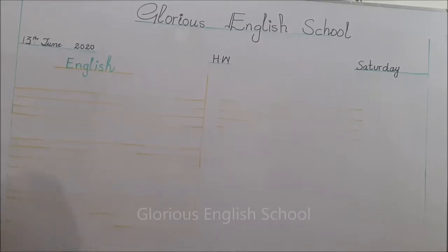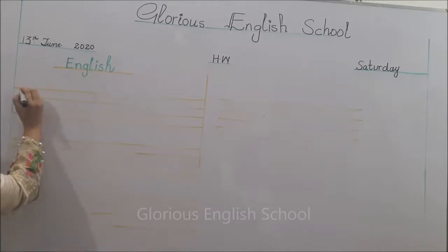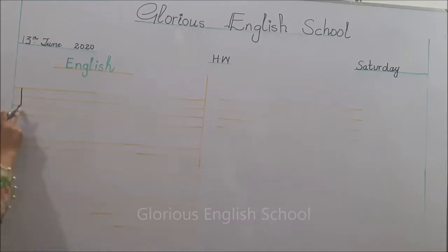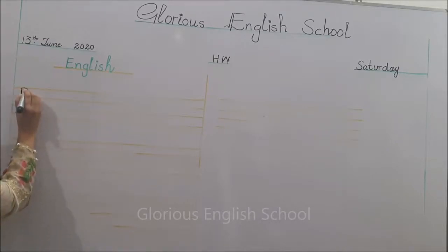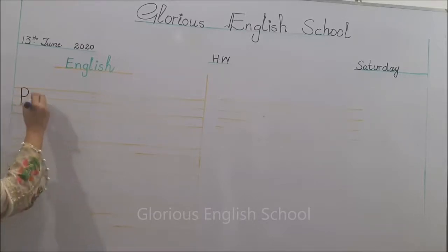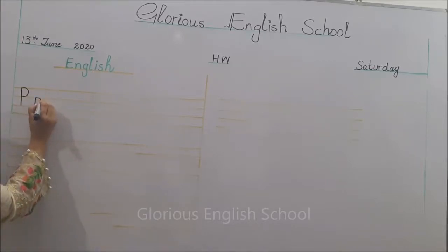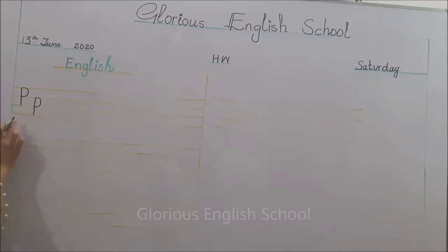English P to Z - हम पहले भी कर चुके हैं, लेकिन आज हम capital P साथ लिखेंगे और फिर small p। हम alphabets लिखना सिखा रहे हैं। हम जितनी practice करेंगे उतना अच्छे से लिखना आ जाएगा। Capital P के लिए first three lines में standing line बनाएं और एक curve बनाएं। Small p के लिए second three lines में standing line draw करेंगे और फिर एक curve बनाएंगे।